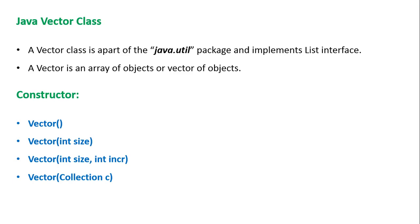The Vector class is a part of the java.util package and it implements the List interface. A Vector is an array of objects. It has four constructors. The first constructor is without any parameter and creates a default Vector with an initial capacity of 10.